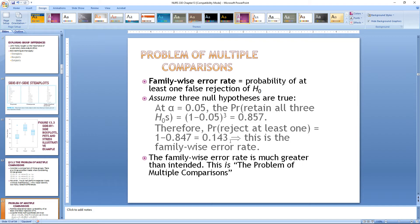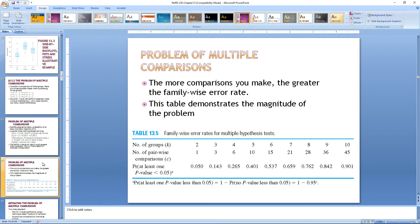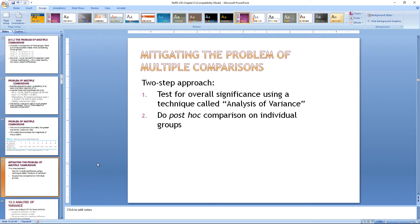This is the family-wise error rate, much greater than intended. This is the problem with multiple comparisons. The problem with comparing multiple groups: the more comparisons you make, the greater the family-wise error rate is. This table demonstrates the magnitude of the problem. As our groups, labeled K, increase from two groups, three groups, four, five, etc., the number of pair-wise comparisons also increases. As you increase them, the probability of one p-value being 0.05 also drastically increases as the groups increase.